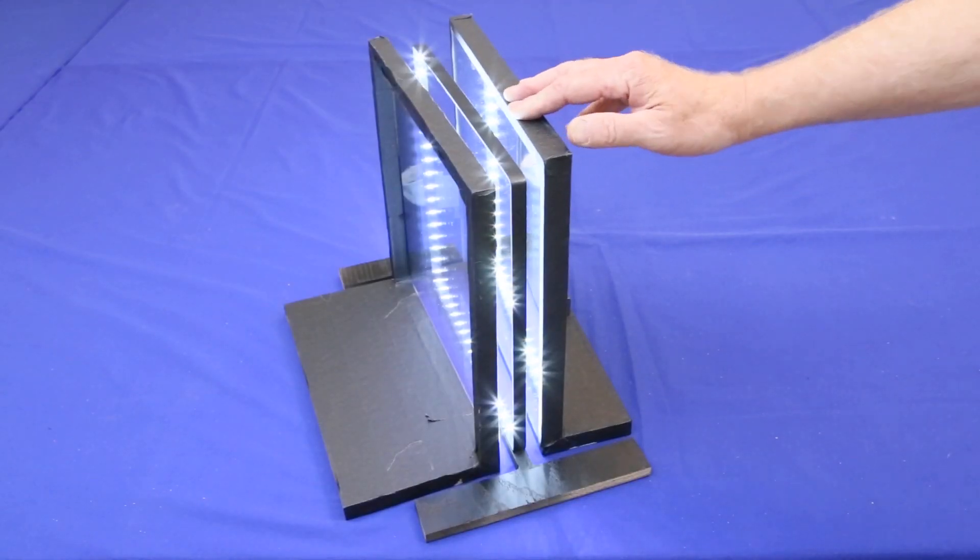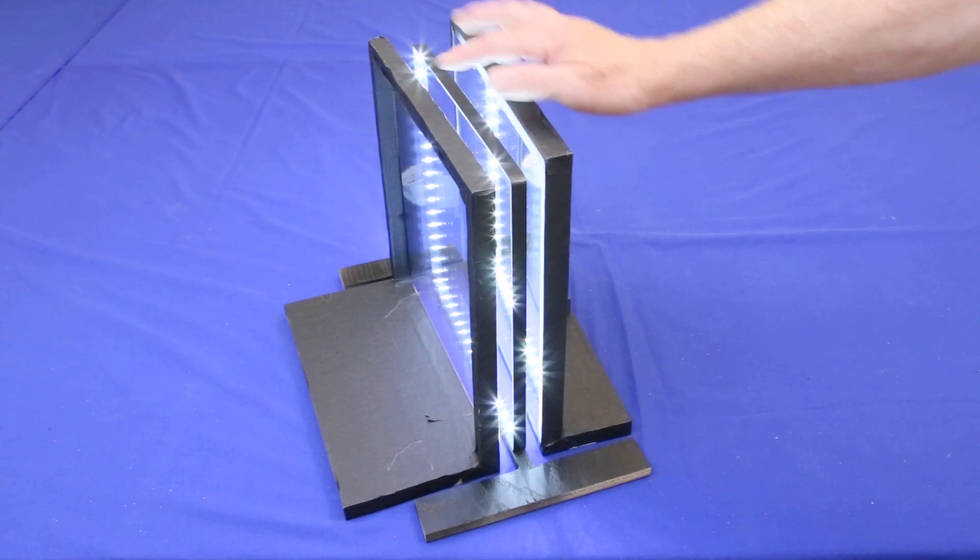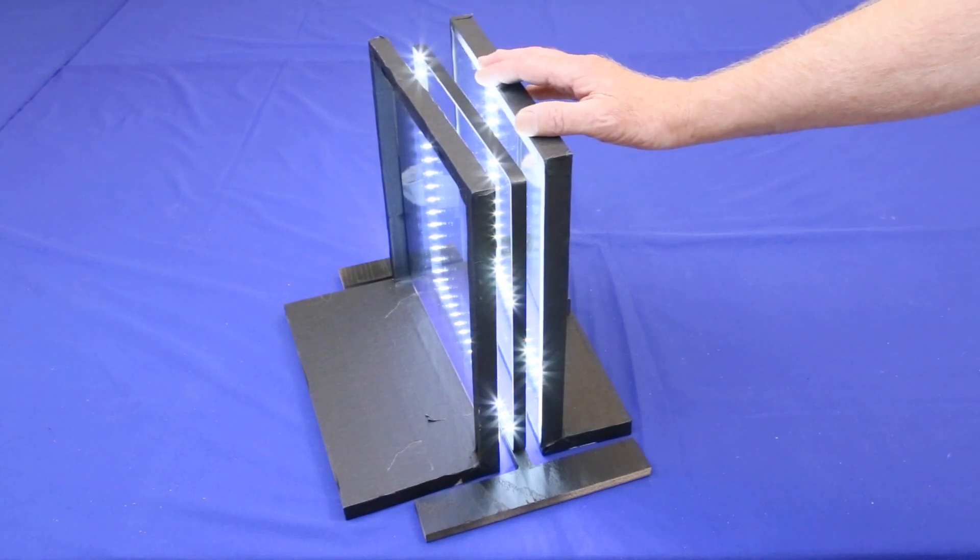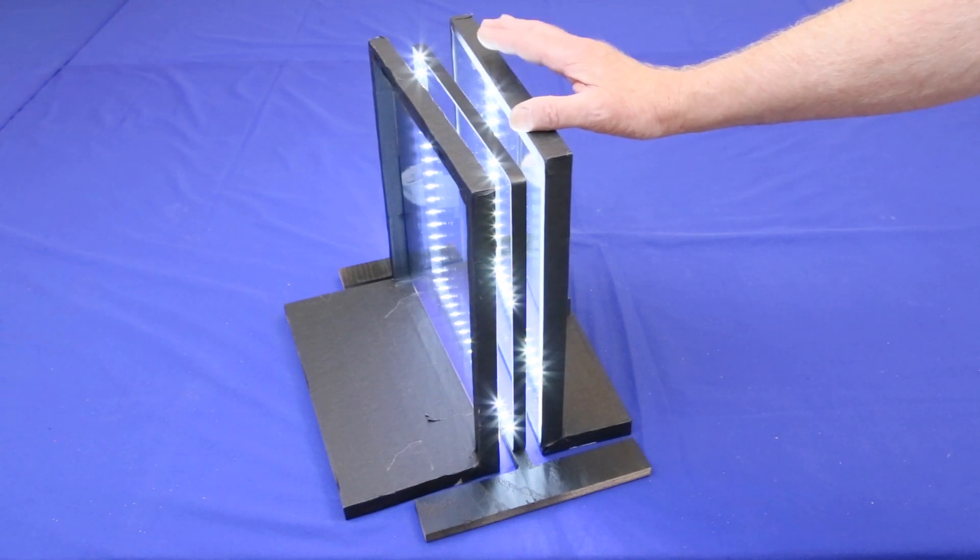While working with this infinity mirror, I learned several useful things. First, that if at all possible, avoid plastic mirrors. Both of mine came with slight warps, which didn't completely go away when mounted on wood frames. These warps distort the images.